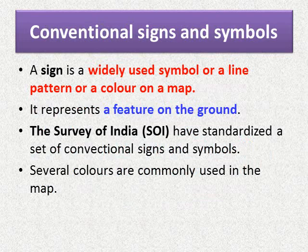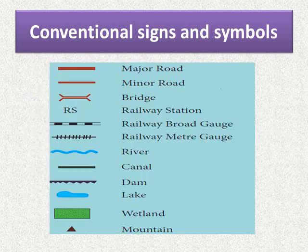Now let us learn about conventional signs and symbols. A sign is a widely used symbol, line pattern, or color on a map that represents a feature on the ground. The Survey of India (SOI) has standardized a set of conventional signs and symbols. In a map, you can find different symbols, patterns, or colors which are fixed and standardized by the Survey of India, and each represents a certain feature on the ground.